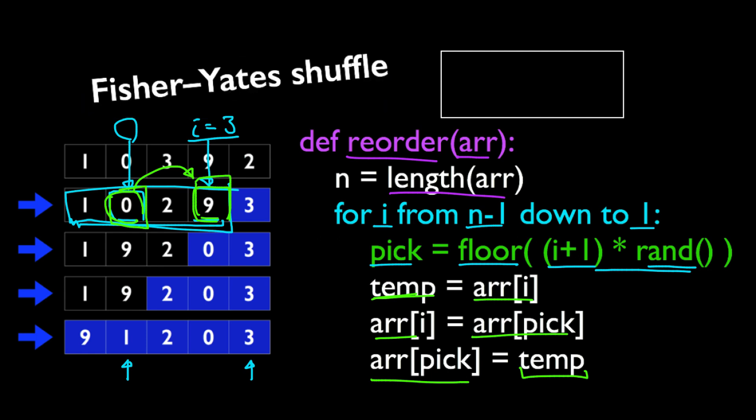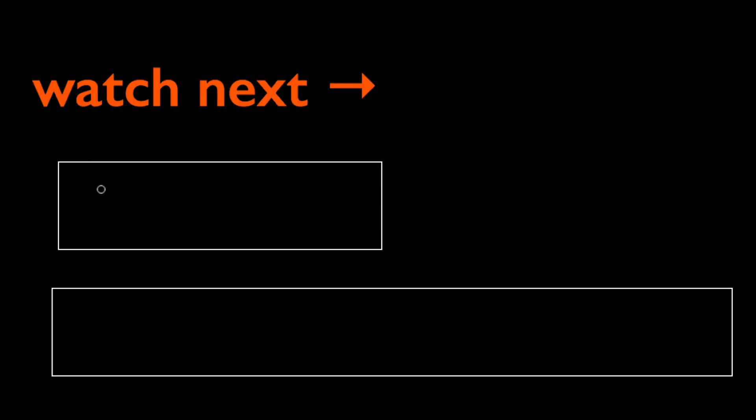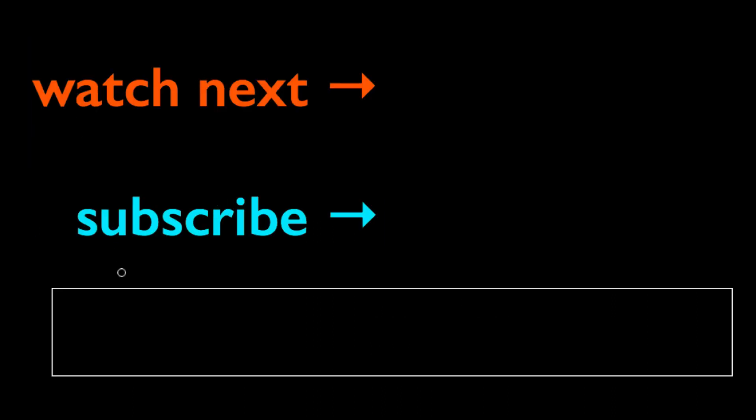This algorithm is also called Fisher-Yates shuffle or Knuth shuffle. That's it for my video — thanks so much for watching.